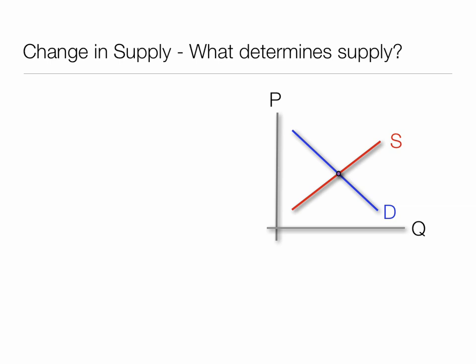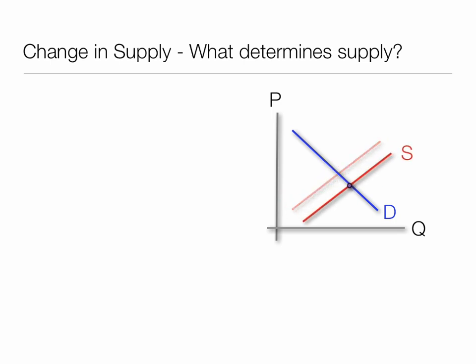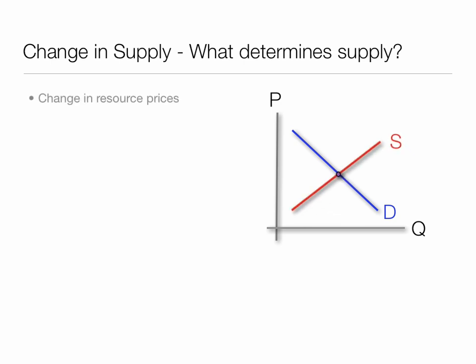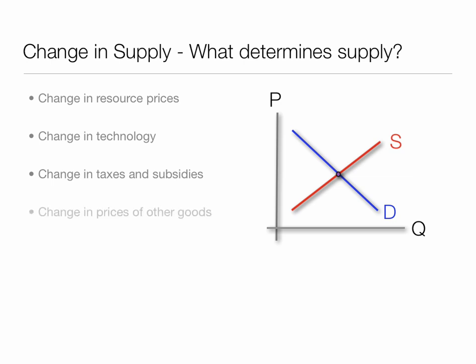Change in supply. When we talk about economics, when we say a change in supply, what we mean is the entire curve — in this case the red line — shifts up and back and forth. A change in supply can be the result of a change in resource prices, a change in technology, a change in taxes and subsidies, a change in prices of other goods, a change in the number of suppliers, and a change in expectations — all of which can shift supply.